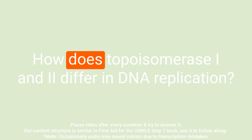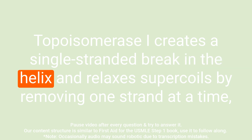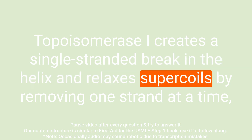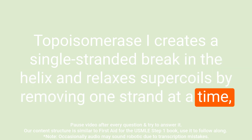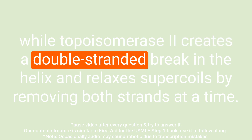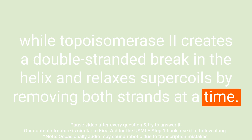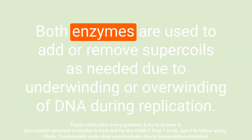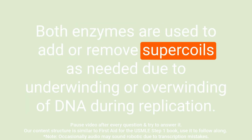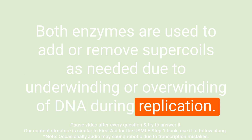Question: How do topoisomerase I and II differ in DNA replication? Answer: Topoisomerase I creates a single-stranded break in the helix and relaxes supercoils by removing one strand at a time, while topoisomerase II creates a double-stranded break and relaxes supercoils by removing both strands at a time. Both enzymes add or remove supercoils as needed due to underwinding or overwinding of DNA during replication.